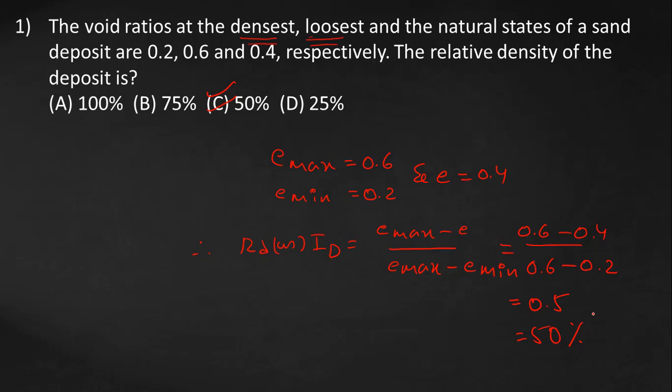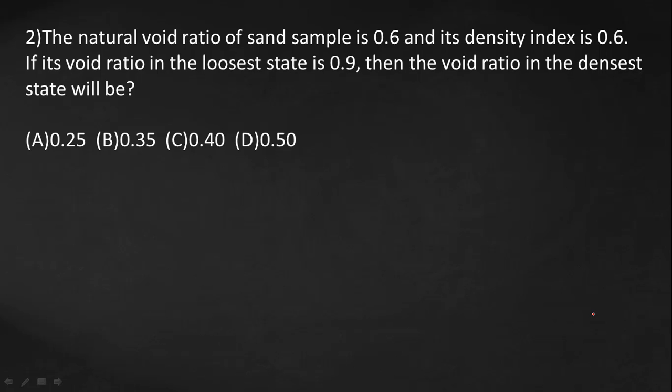Next question. The natural void ratio of sand sample is 0.6 and its density index is 0.6. If its void ratio in the loosest state is 0.9, then find the void ratio in the densest state. So we want to find emin.